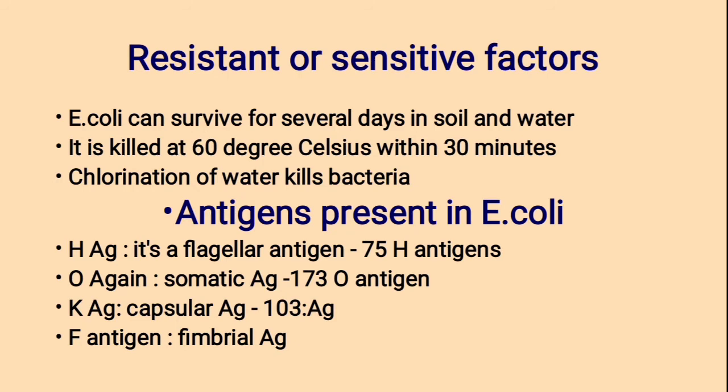Antigens present in E. coli. First, H antigen — it is a flagellar antigen; mainly 75 H antigens are present. Then O antigen, also known as somatic antigen; 173 O antigens are present. Then K antigen, known as capsular antigen.